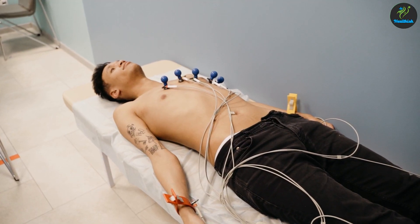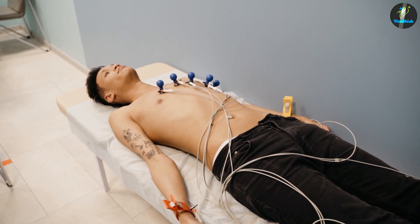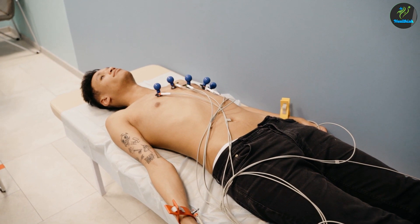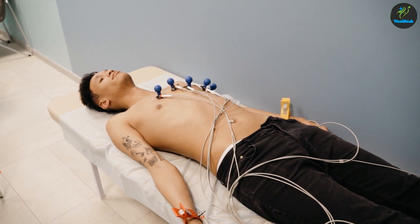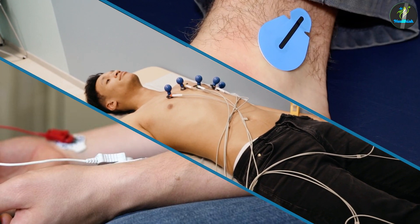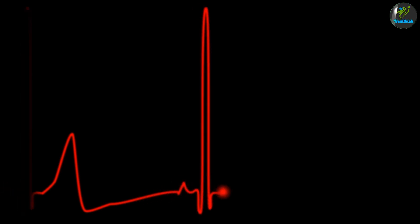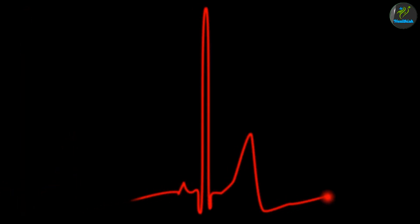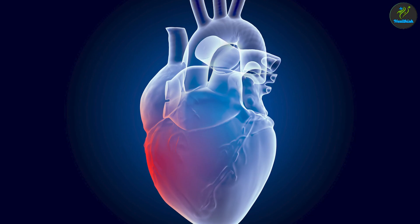ECGs are often performed in a clinical setting by attaching electrodes to the patient's chest, arms, and legs. These electrodes are connected to a machine that records the electrical signals from the heart.